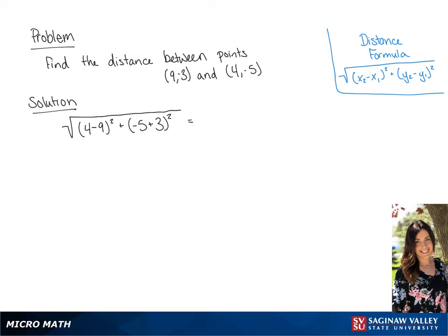If we simplify this, we are going to get the square root of 25 plus 4. So our final answer is going to be the square root of 29, which is approximately equal to 5.385.